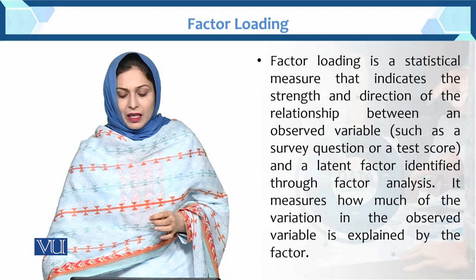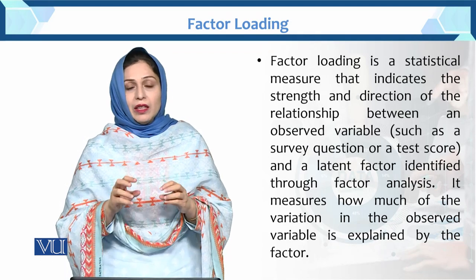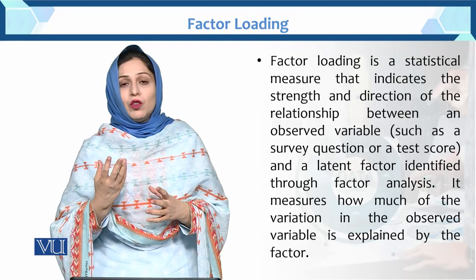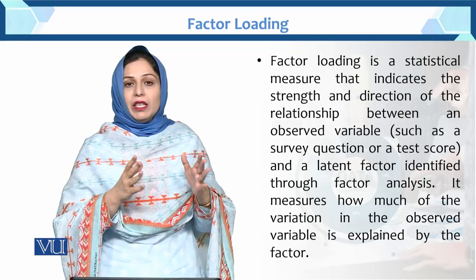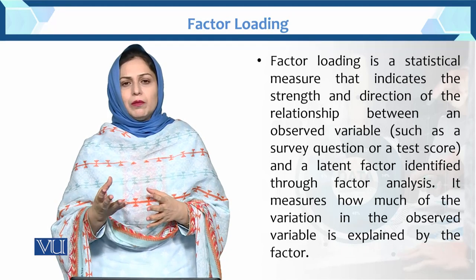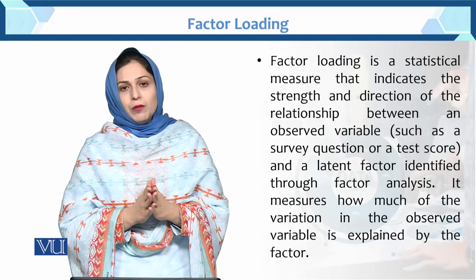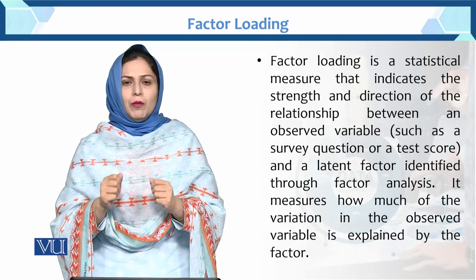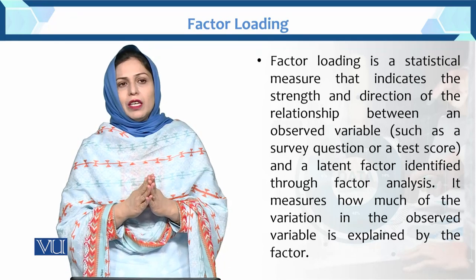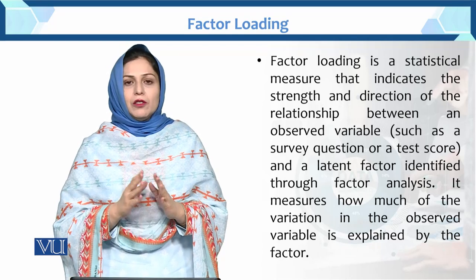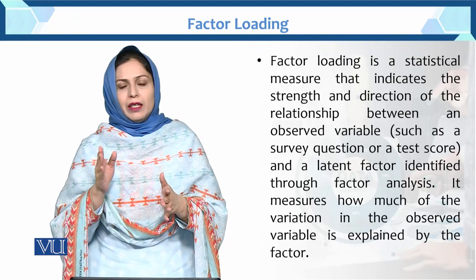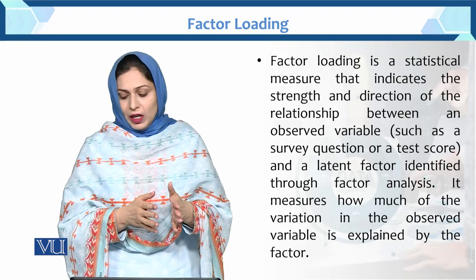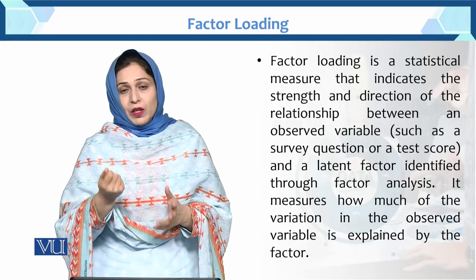Factor loading is a statistical measure that indicates the strength and direction of the relationship between an observed variable and the factor. If it is positive correlation, it shows direction or strength. If it is high correlation — that is, 0.7 and above — there is a strong correlation between the factors and the items. More than 0.3 to 0.7 is called moderate correlation, and less than 0.3 means low correlation.